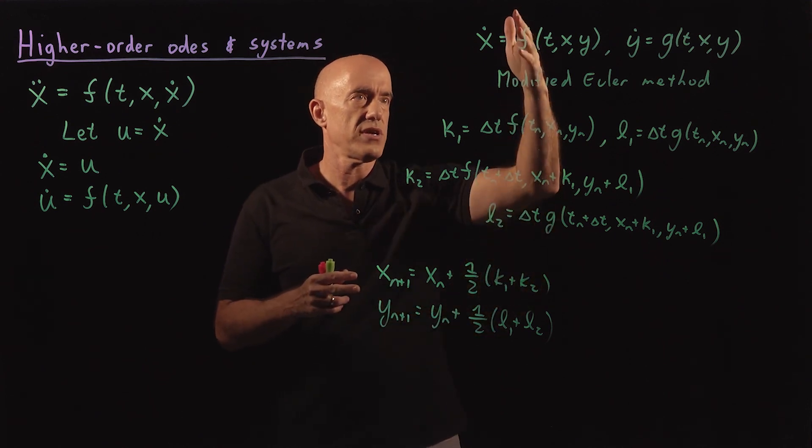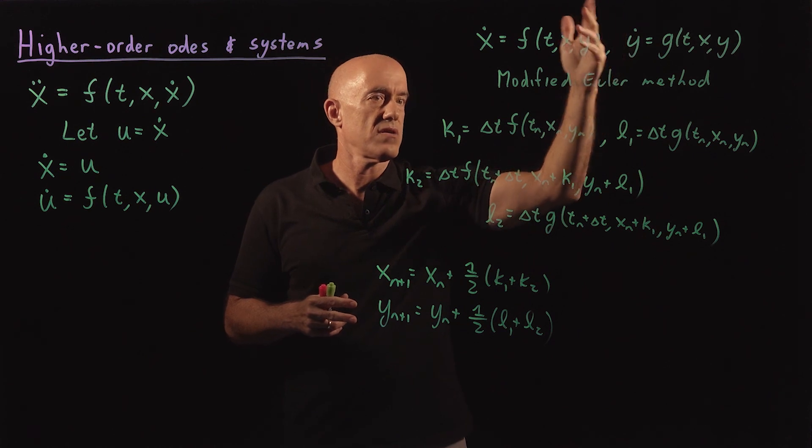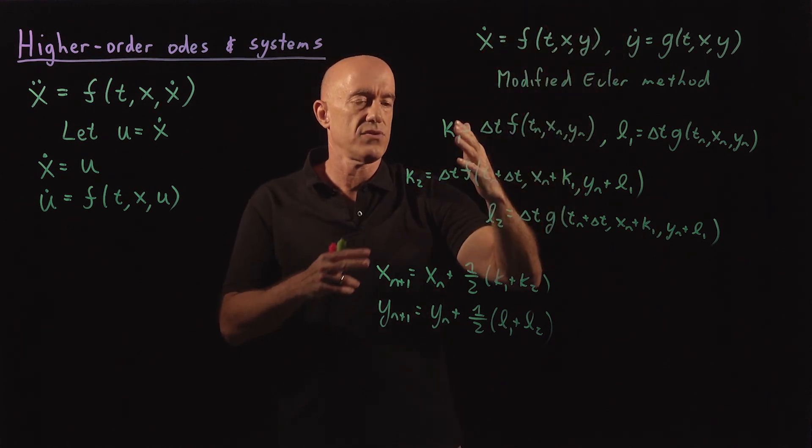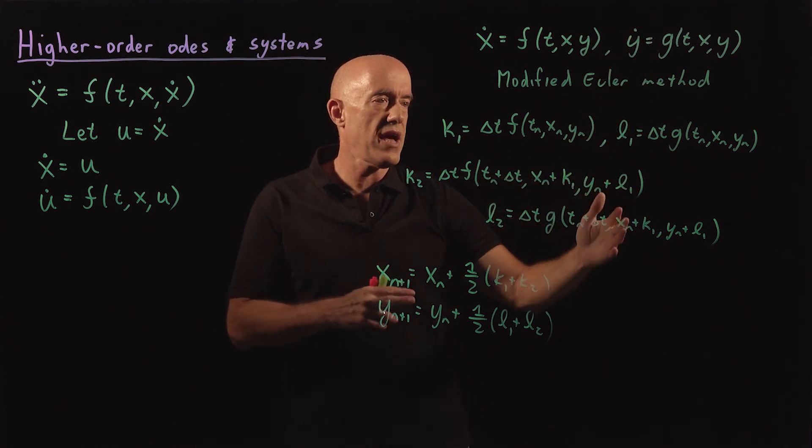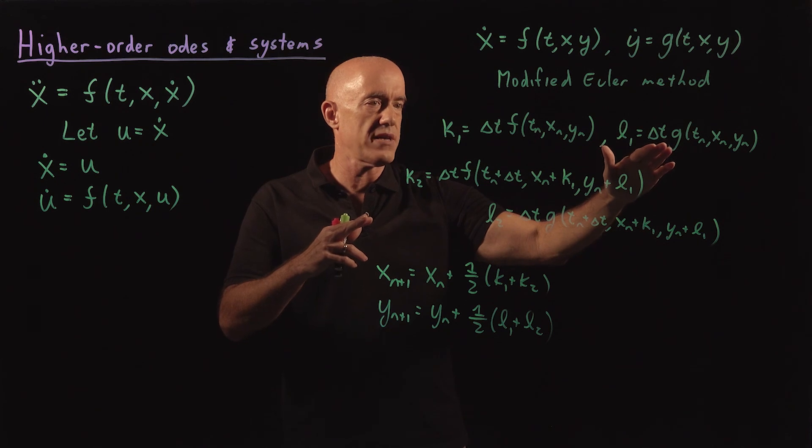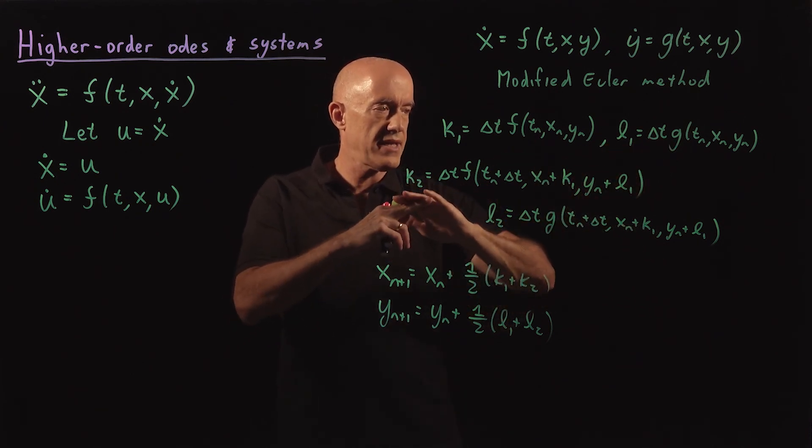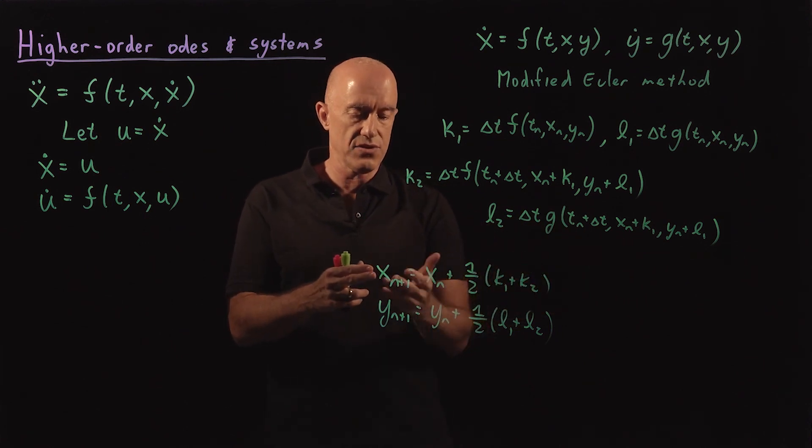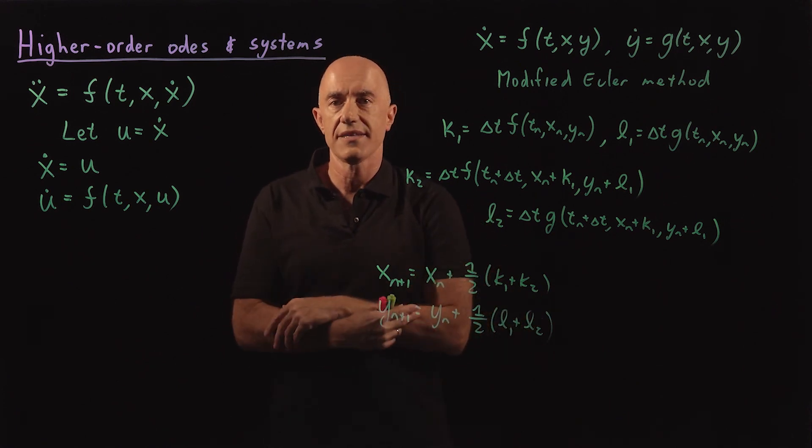So you're integrating the Xs using the Ks, and you're integrating the Ys using the Ls. So at each stage you need to compute K1 and L1 at stage 1, and K2 and L2 at stage 2. And then you use the Ks to increment the Xs, and the Ls to increment the Ys.